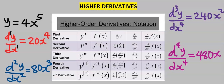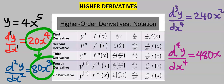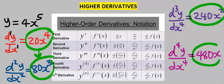The first differentiation is this. If we differentiate this again, we are going to have this. When we differentiate this again, we are going to have this. And when we differentiate it again, we are going to have this.